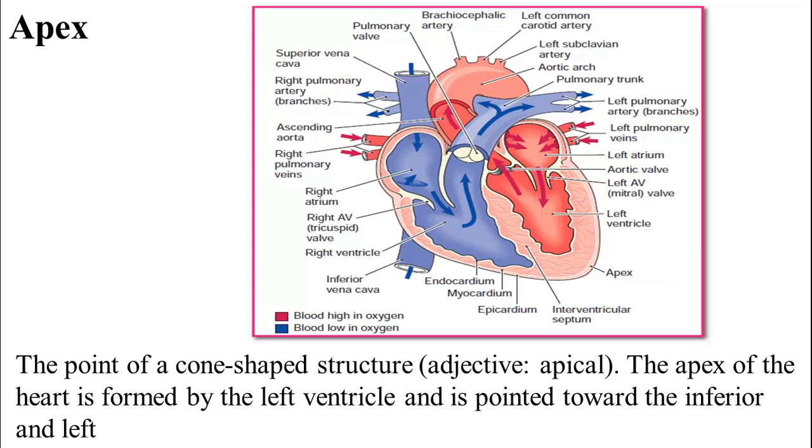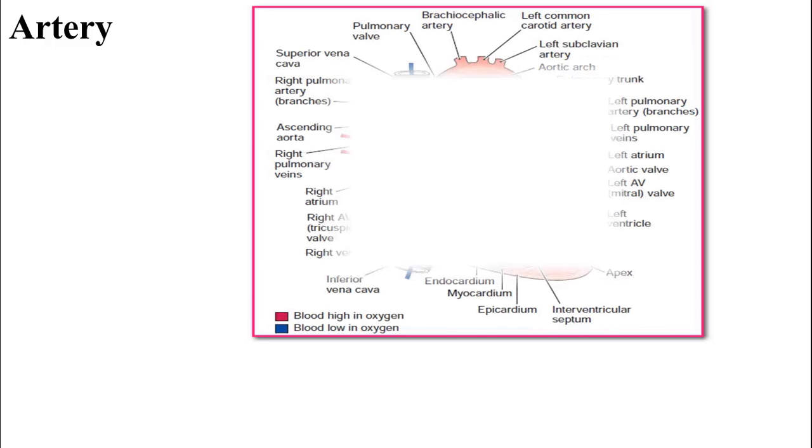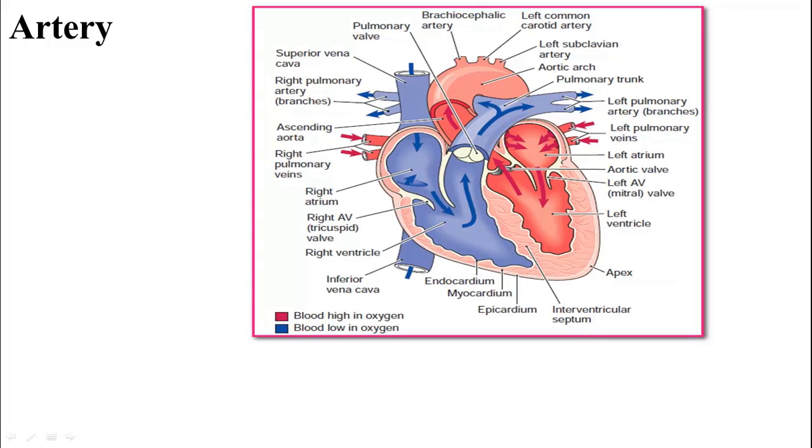The artery is a blood vessel carrying oxygenated blood — blood high in oxygen — away from the heart and to the body's tissues. The artery carries blood away from the heart, and the aorta is the main artery in the body.